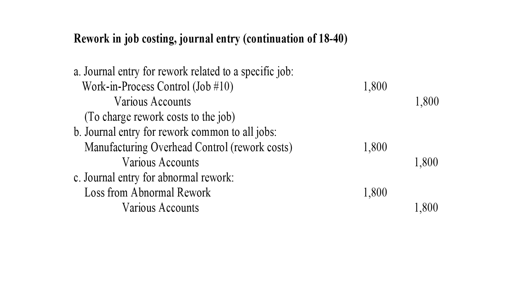The second entry is the journal entry for rework common to all jobs. In this case, manufacturing overhead control is on the debit side, and the credit side has the various accounts. The costs of rework, when normal and not attributable to a specific job, are charged to manufacturing overhead and spread via overhead allocation over all jobs.